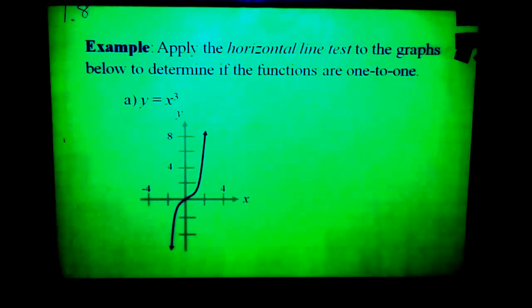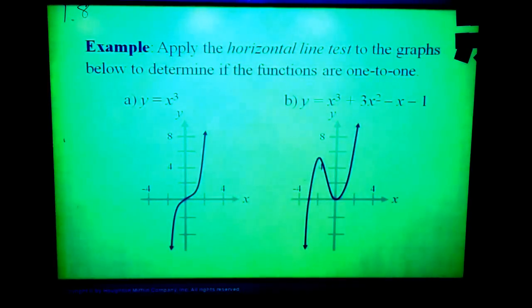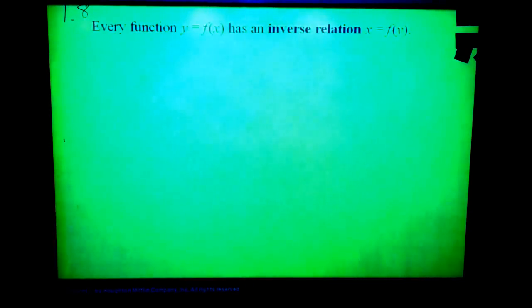Let's apply the horizontal line test to this graph in A and to this graph in B. And we see that A is one-to-one and B is not one-to-one. Again, this is just a designation of a function.